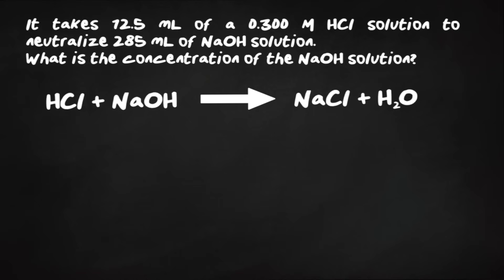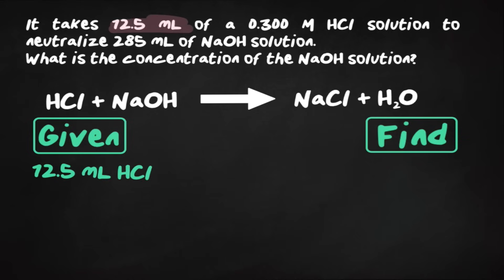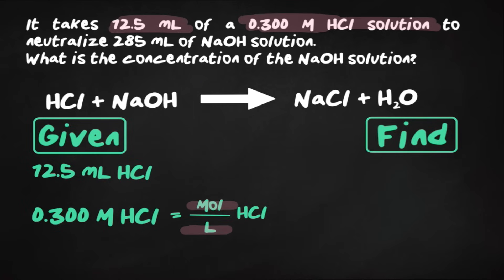Let's start with identifying our given and what we're finding. So we're given 12.5 milliliters of HCl solution and we're also given our molarity of our HCl solution as well. Now, whenever you see that molarity, that's going to be used as your conversion factor. I want you to split that up automatically to moles over liters. So the 0.300 will go with the moles on top, and this will be per every one liter of HCl.